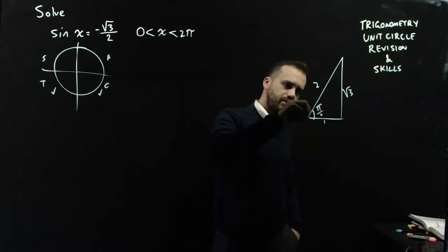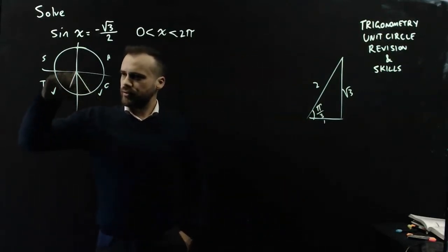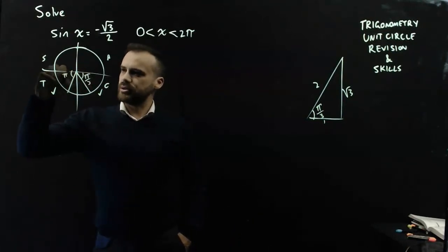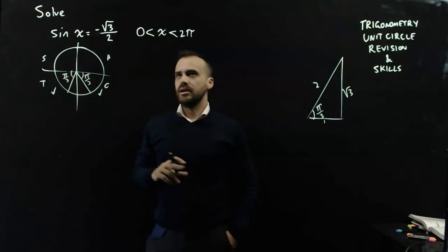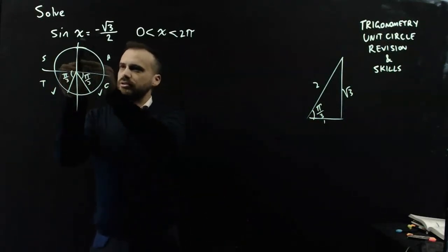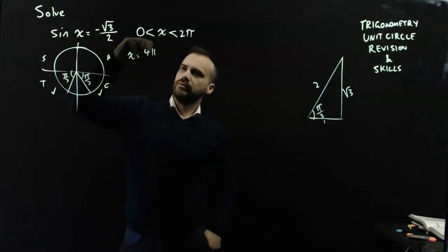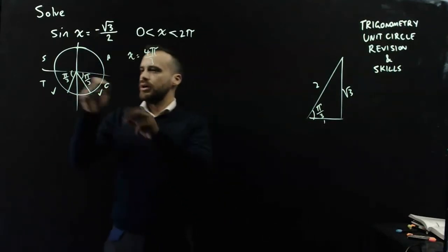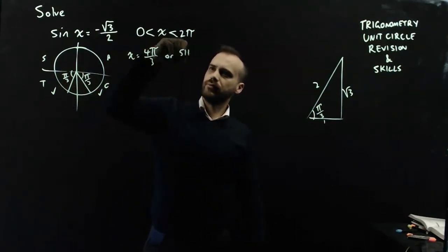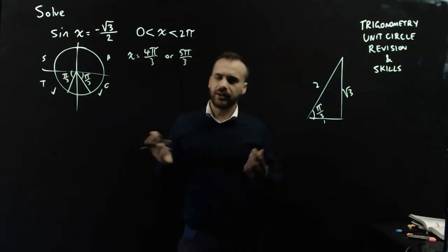Now, sine is opposite over hypotenuse, so it must be that angle there, and that angle there is π on 3, which means that that is my solution, π on 3, and that is my solution, π on 3. I'm working between 0 and 2π, so it's going to be π on 3, 2π on 3, 3π on 3, 4π on 3, or 5π on 3. So, that's solving something fairly simple like that.